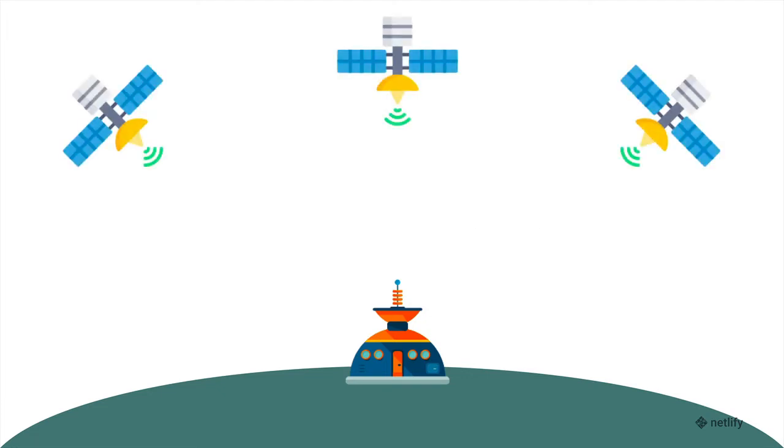Now, these satellites up here represent different APIs where we often fetch data in order to populate our website or application. And so typically, we'd send data up to request something, and then the API would send it back.